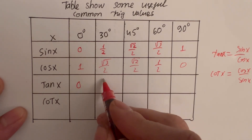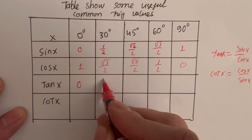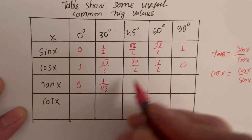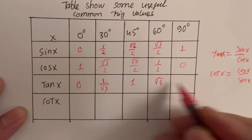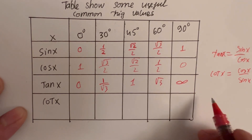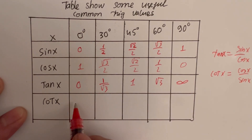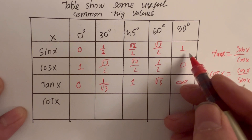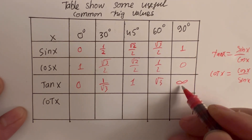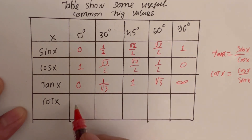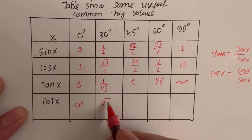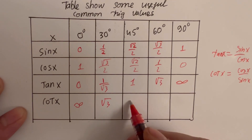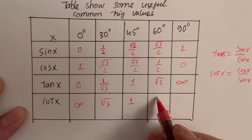So tan at 30° is 1/√3, at 45° is 1, and at 90° tan is undefined — infinity. And cot is the same pattern in reverse: at 0° cot is infinity, at 45° it's 1, at 60° it's 1/√3, and at 90° it's 0. Very simple!